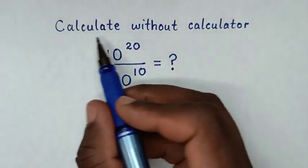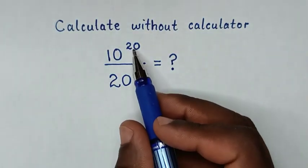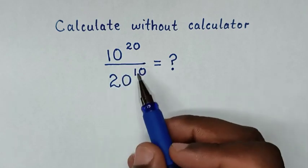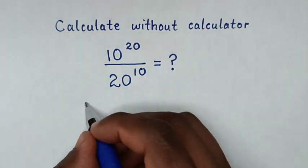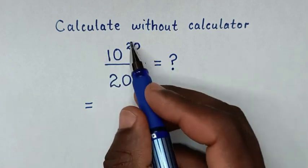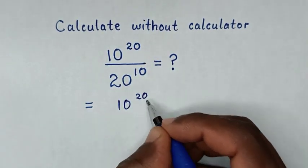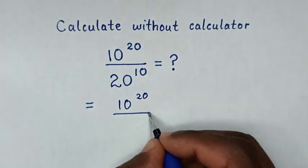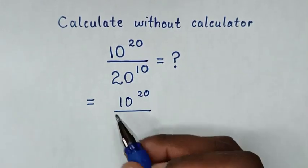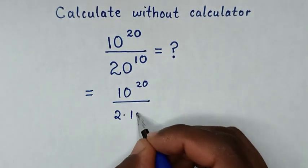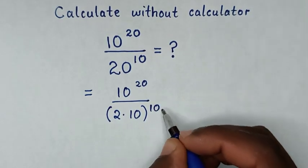Hello. How to calculate without a calculator: 10 power 20 over 20 power 10. So, it will be equal to — from here, in the numerator it will be 10 power 20, then over in the denominator, 20 is the same as 2 times 10, bracket power of 10.